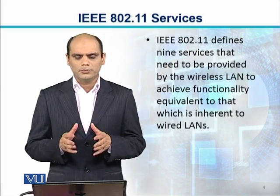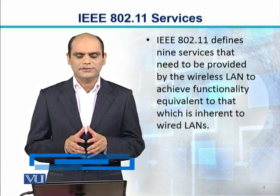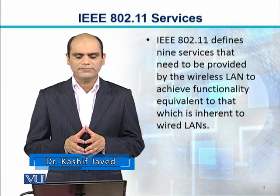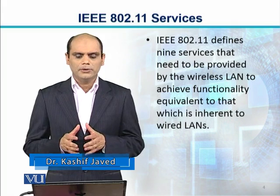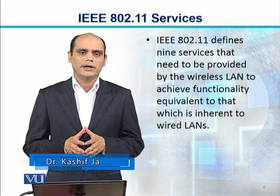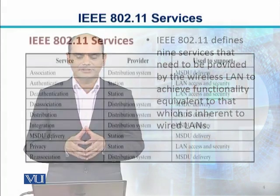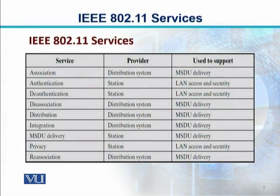IEEE 802.11 defines 9 services that need to be provided by the wireless LAN to achieve the same functionality which is equivalent to a wired LAN. The table has three columns: services on the left-hand side, then provider, then used to support.